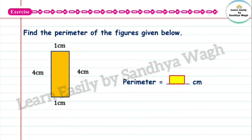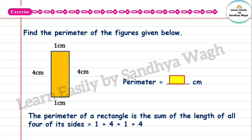Exercise: Find the perimeter of the figures given below. It is a rectangle with sides of 1 cm, 4 cm, 1 cm, and 4 cm. The perimeter of a rectangle is the sum of the length of all four of its sides. So 1 plus 4 plus 1 plus 4 is equal to 10 centimetres. The perimeter of this rectangle is 10 centimetres.